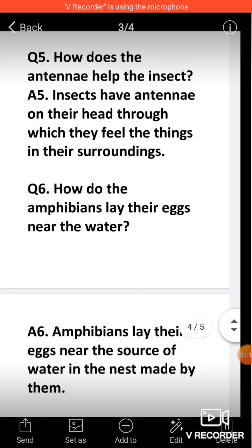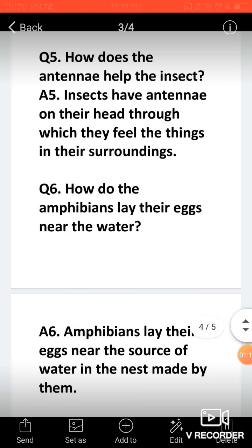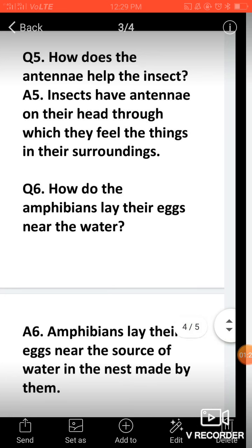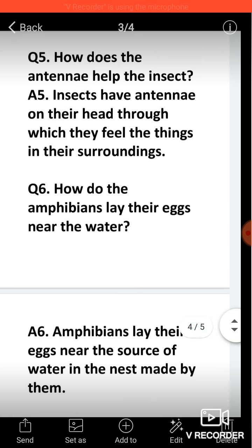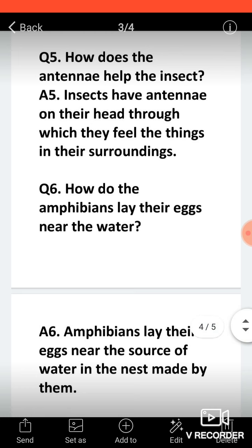Now question six is how do the amphibians lay eggs near the water? Answer is amphibians lay their eggs near the source of water in the nest made by them. Amphibians make nests mostly made up of sand and soil, and in their nest they lay eggs.